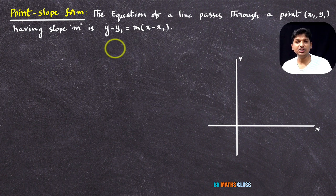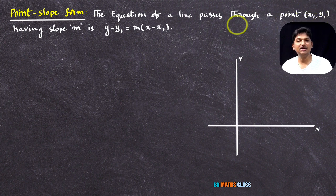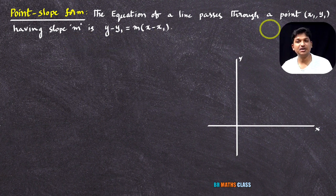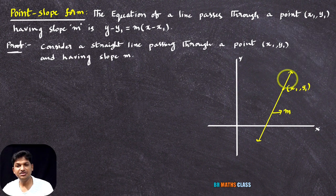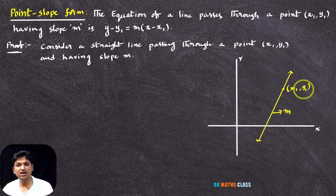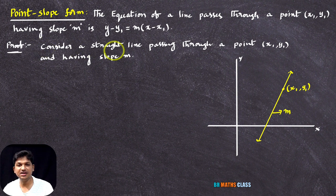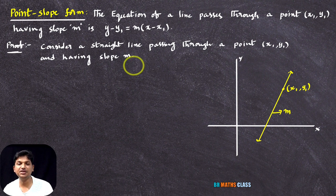We are finding the equation of a straight line. How is that straight line? It passes through point x1, y1 and has slope m. I will consider a line which passes through point x1, y1 and having slope m. You see here, I considered a straight line which passes through the point x1, y1 and the straight line having slope m. Consider a straight line passes through the point x1, y1 and having slope m.